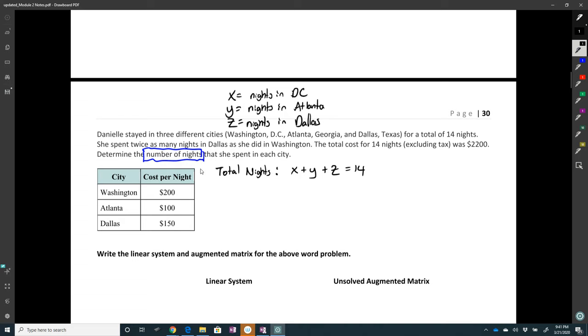Okay, and then the second equation is going to be the cost. Notice that if you read the question, or not read the question, but all the costs are listed here. The total is right there. Okay, so the total cost. So if you're doing this problem, that's going to be 200x plus 100y plus 150z is equal to 2,200.